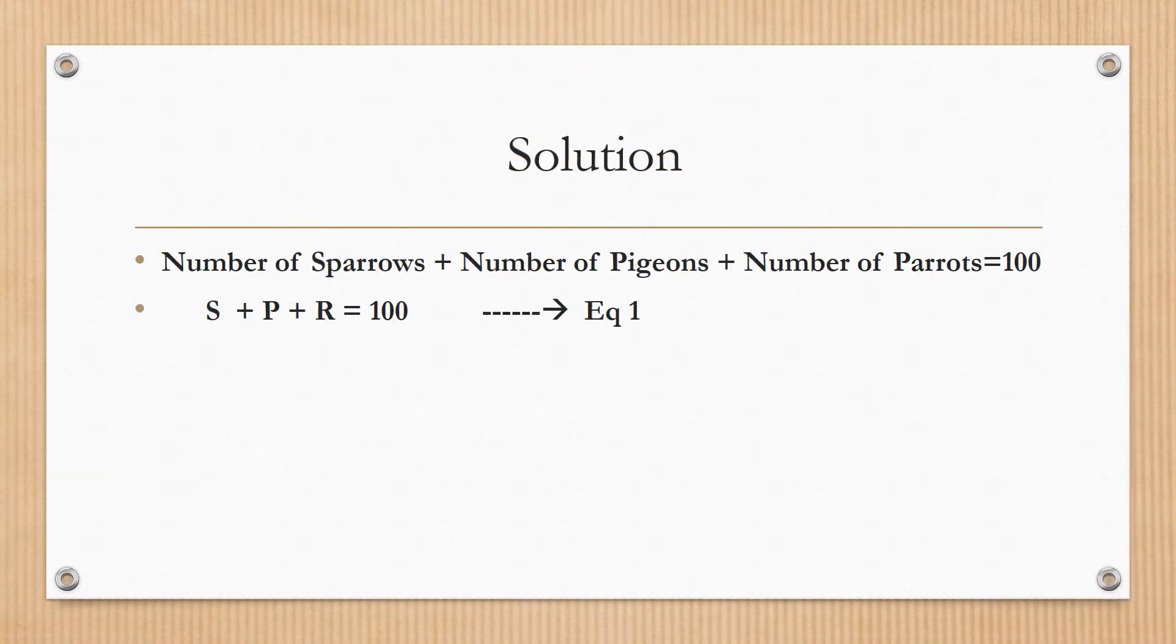The first equation shows the number of birds. Sparrows plus pigeons plus parrots is equal to 100. S plus P plus R equals 100.